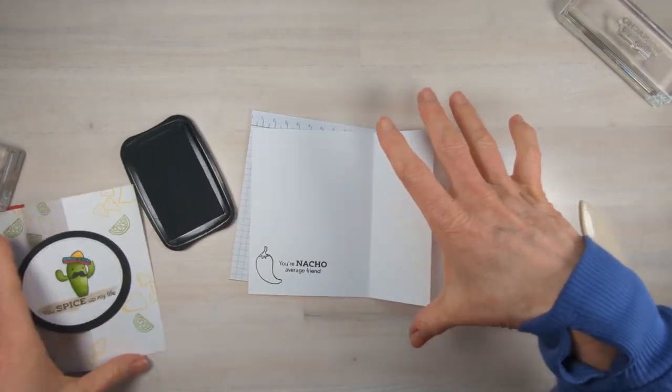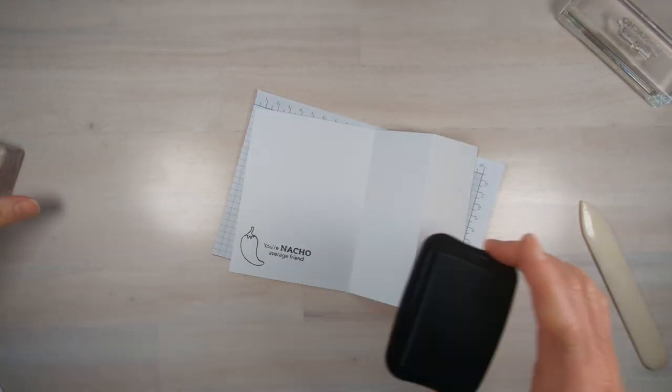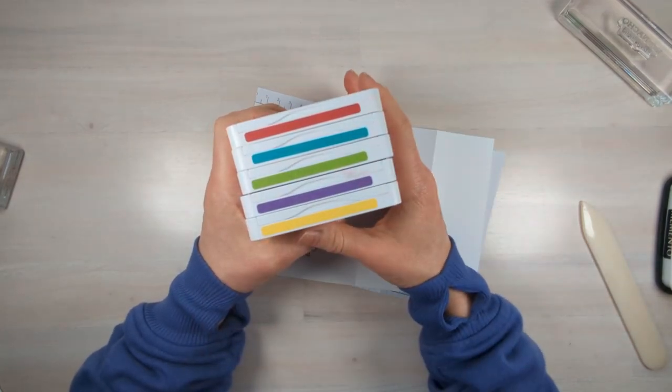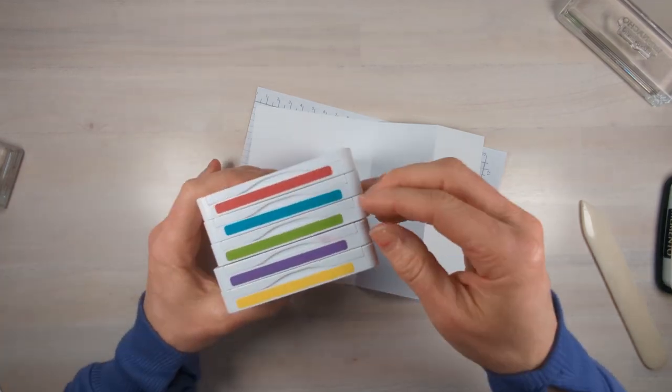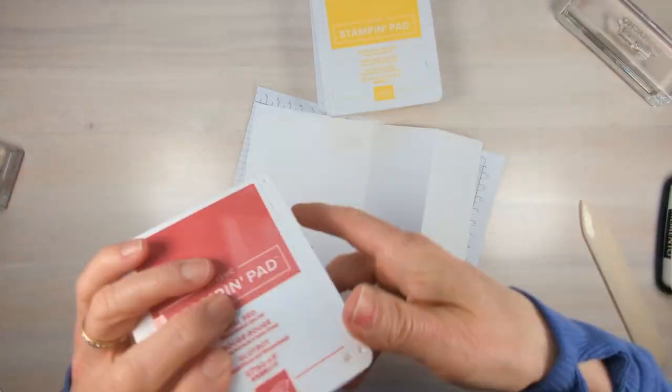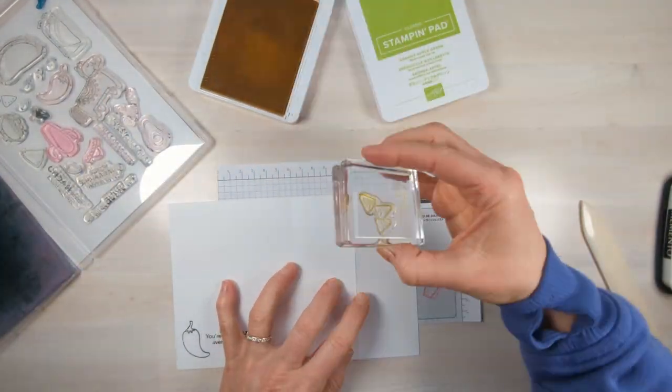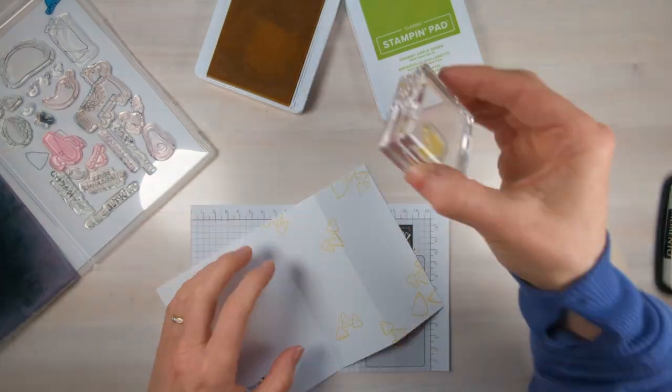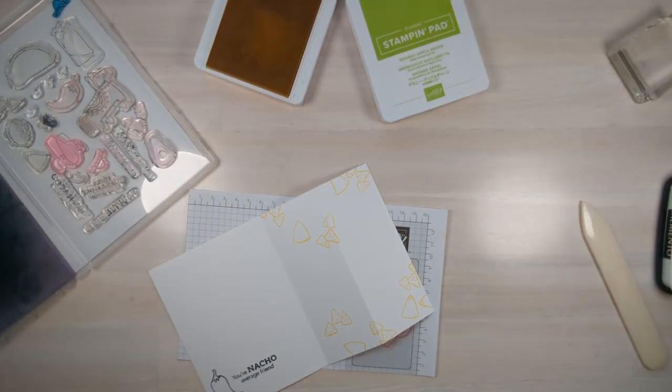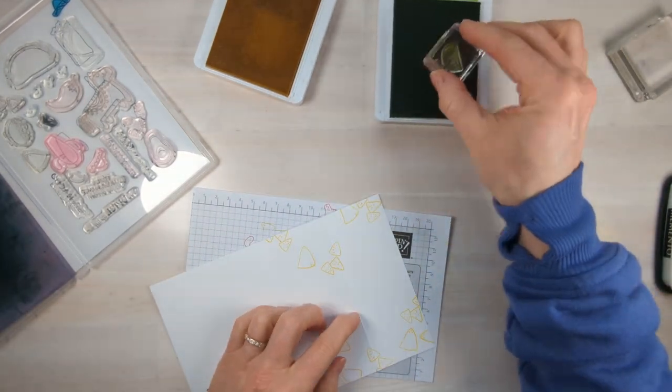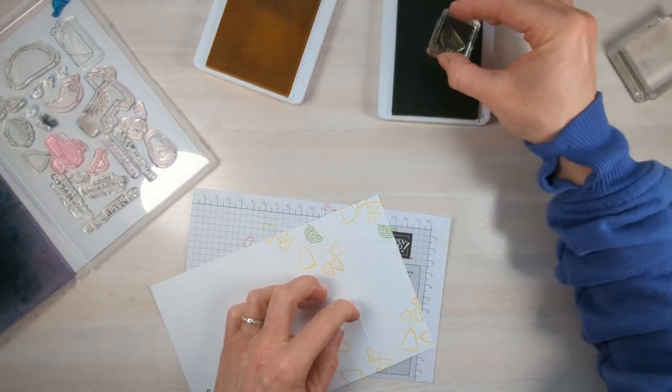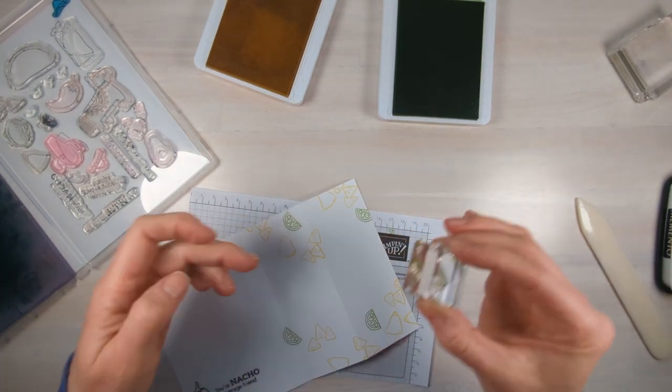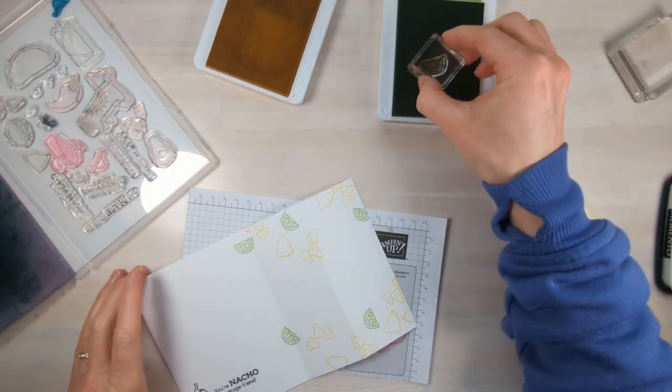Now while we're letting that dry, we'll go ahead and stamp the rest of this panel. Don't be intimidated by the number of colors I'm using in this project. You pick your favorite ones. You don't need all this if you are new to stamping. So we've got big tortilla chips, small tortilla chips, and now this adorable little lime. Remember, your circle is going to be right here. So some of this is going to be covered up, but we can go back in and throw another stamp there if we need to. I'm making sure to stamp off my paper and on the different panels too.